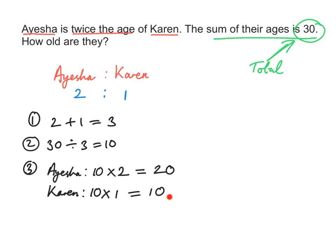Does this sum to give 30? Yes, clearly it does. Does this relationship hold? Yes — if Karen is 10 years old, then Aisha is twice her age: 2 times 10 is 20. Aisha's age is double that of Karen, so this relationship holds.